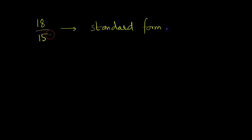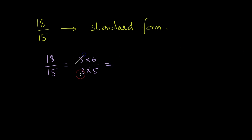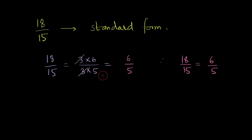Note that any given rational number can be converted into its standard form. Taking the example of 18 by 15, we write it as 3 times 6 divided by 3 times 5 and cancel out the common factors from the numerator and denominator. We are left with 6 by 5, so 18 by 15 equals 6 by 5. This is how, by cancelling out common factors other than 1, we can reduce a rational number into its standard form. So 6 by 5 is the standard form of 18 by 15.